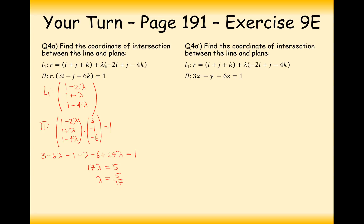So all we need to do now is substitute lambda equals 5 seventeenths into the combined vector for line 1. For x: 1 minus 2 times 5 seventeenths equals 1 minus 10 seventeenths, which is 7 seventeenths. For the y coordinate: 1 plus 5 seventeenths equals 22 seventeenths. For the z component: 1 minus 4 lots of 5 seventeenths equals 1 minus 20 seventeenths, which is minus 3 seventeenths. So the coordinate is (7/17, 22/17, -3/17).